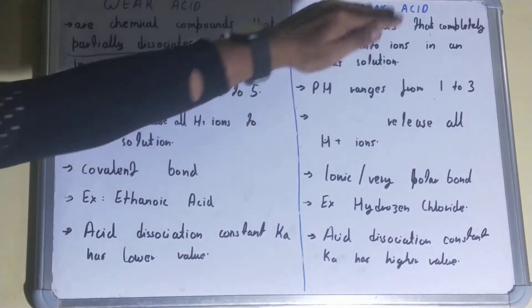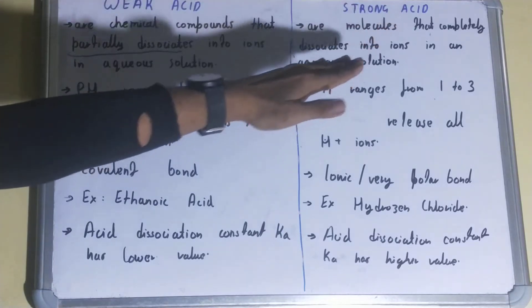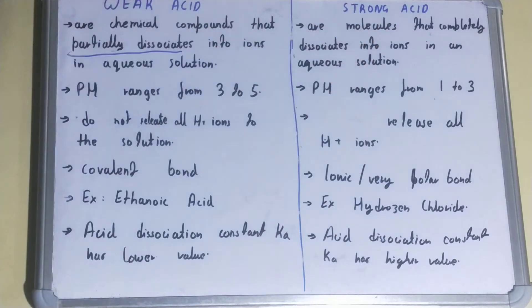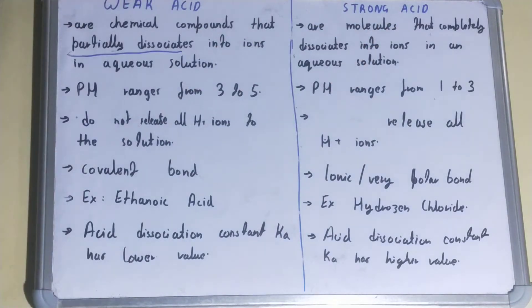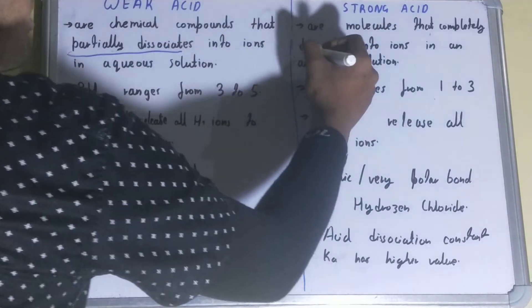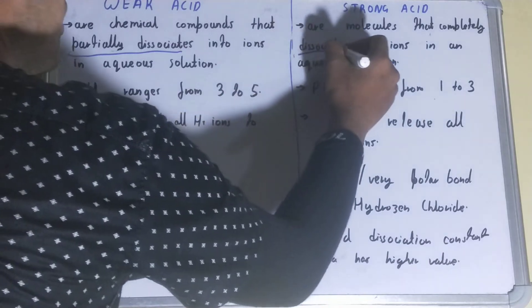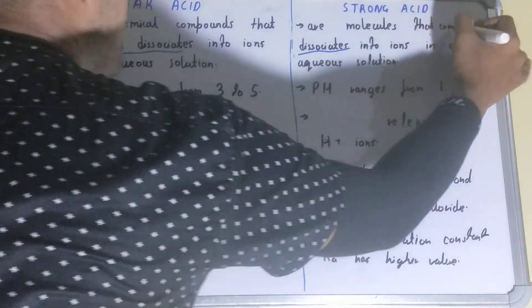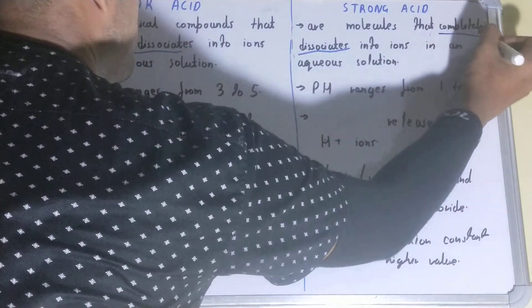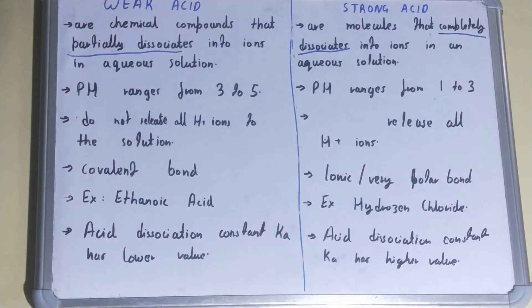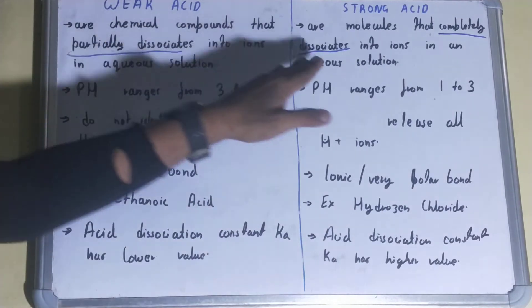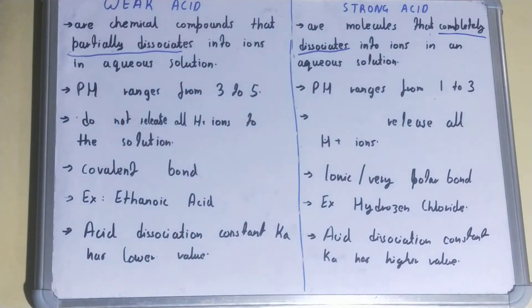Strong acids, on the other hand, are molecules that completely dissociate into ions when dissolved in aqueous solution. Whenever you dissolve a strong acid in aqueous solution, it will completely dissociate into ions.